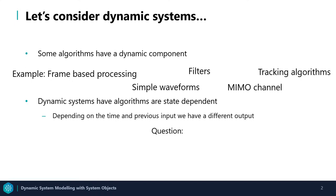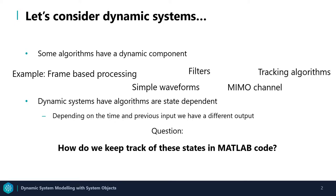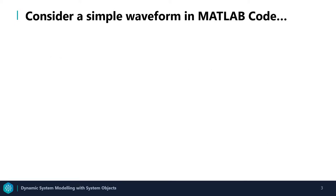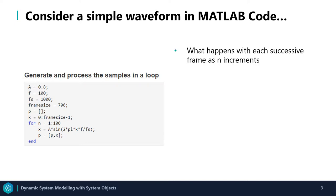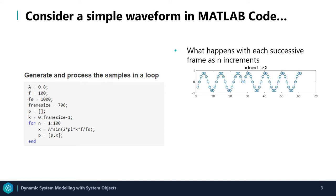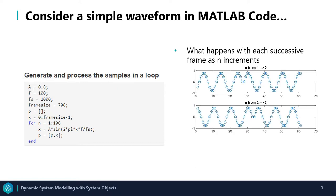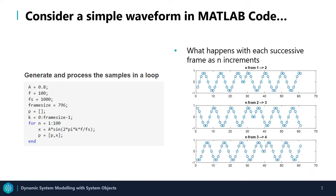So the question you may be asking is: how do I keep track of these states in MATLAB code? Let's consider a simple waveform problem written in MATLAB code. Here I have a frame-based sine wave that I'd like to process. I have an amplitude of 0.8, frequency of 100 Hz, sampling frequency of 1000 Hz, and my frame size is 796. If we consider what happens with each successive frame as n increments, we will notice that there are actually discontinuities and that each frame begins again from the value zero. This is not what we want and this is obviously an incorrect result.